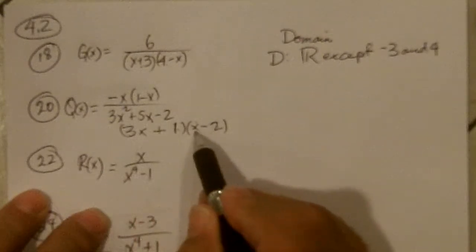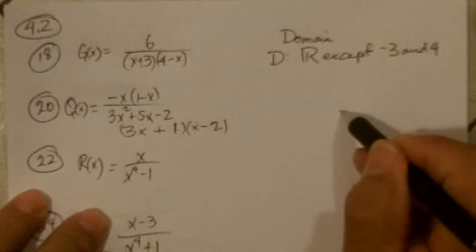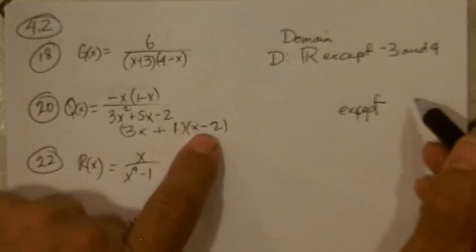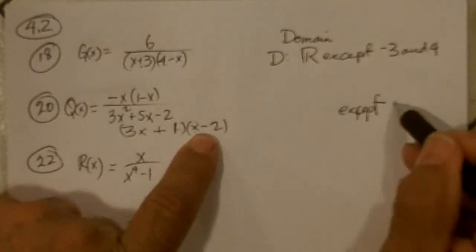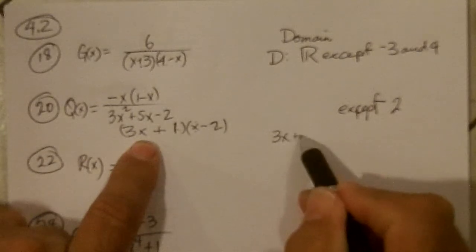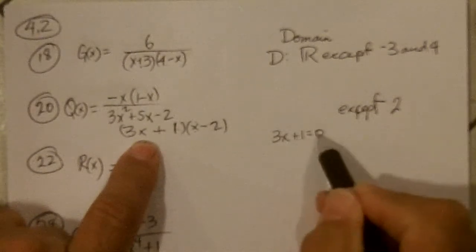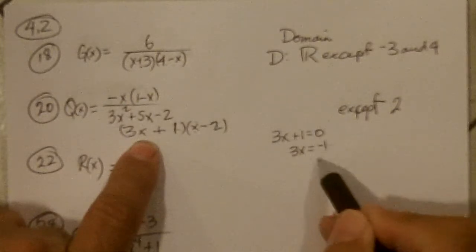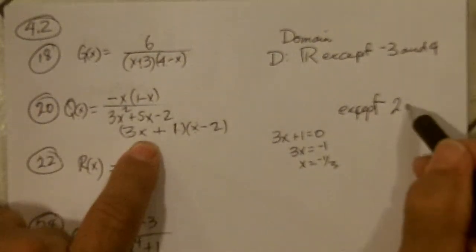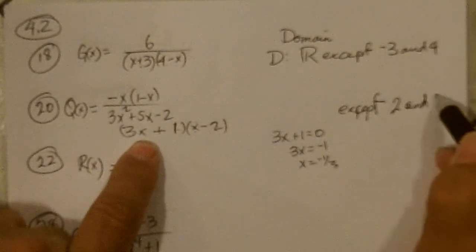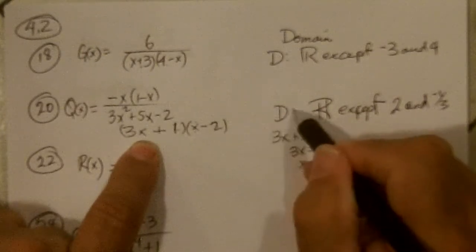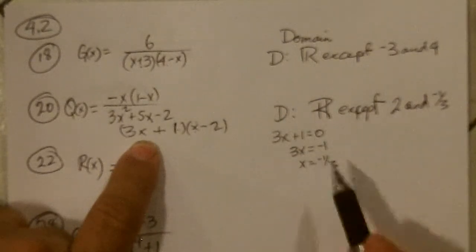So if that's the way it factors, then a 2 would cause problems. So I'm going to have to leave out, there's going to be a vertical asymptote at 2, and also at whatever makes 3x plus 1 equals 0. So subtract 1, divide by 3.